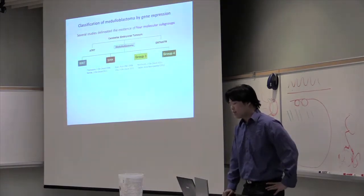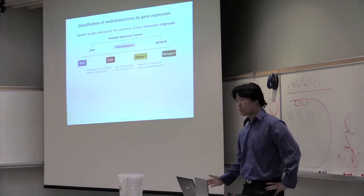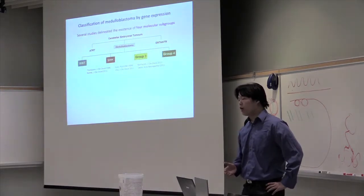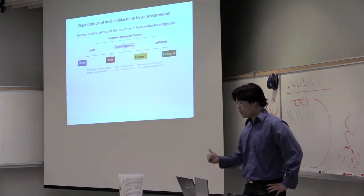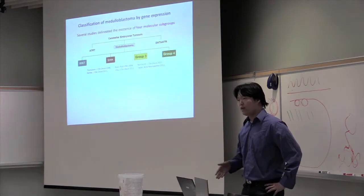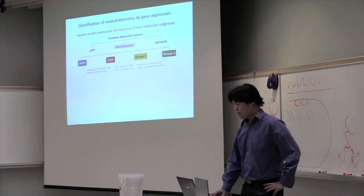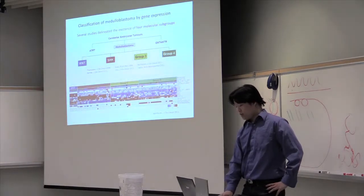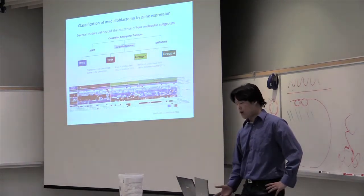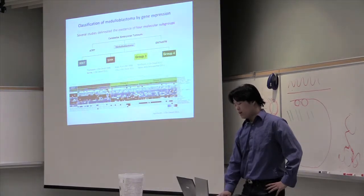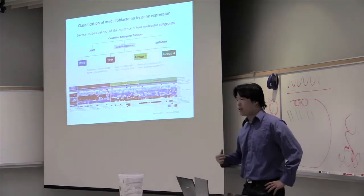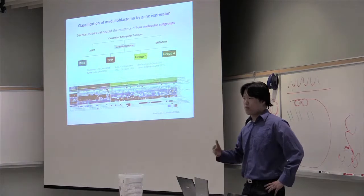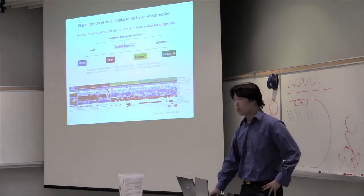And recently, several studies have delineated existence of four different subgroups that are defined based on the RNA expression profile. Shown here are the four different subgroups, meaning Wnt, Sonic Hedgehog, Group 3, and Group 4. And in this publication, I've shown you how we determine these subgroups based on clustering, and also provide clustering method where different genetic markers are upregulated between subgroups. And these different subgroups have different clinical and pathological characteristics.